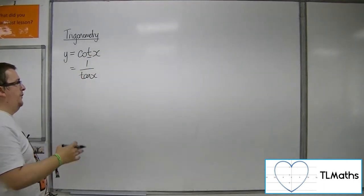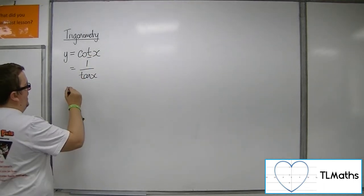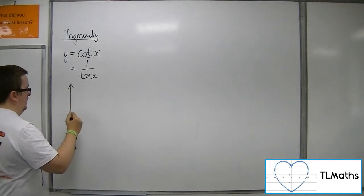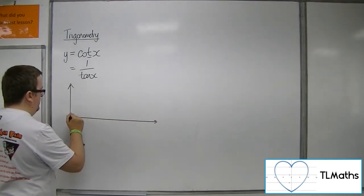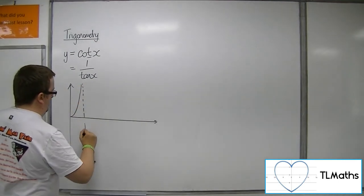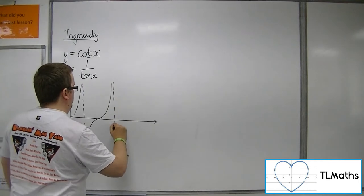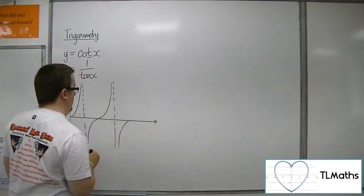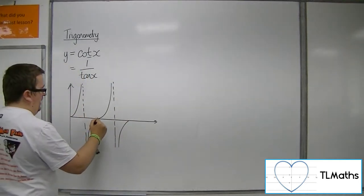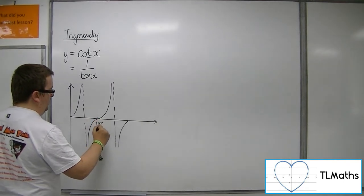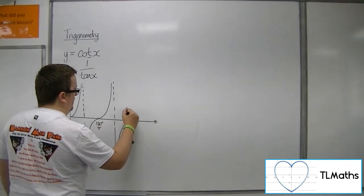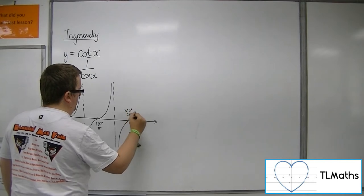So let's draw tan. This is the one I always underestimate of how far I'm going to need to draw it. So there's 180 or pi, there's 360, 2 pi.